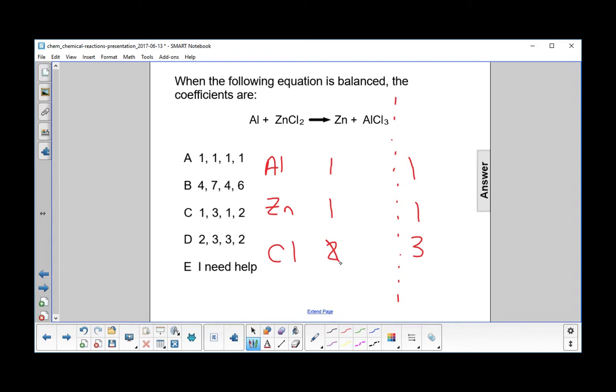So multiply that by three to get six. So let's put a three up here. And now how do I turn the chlorine on the right into six? I multiply it by two. So that'll get six, and I put a two in front of here.